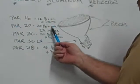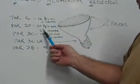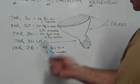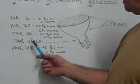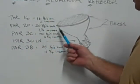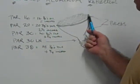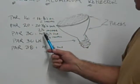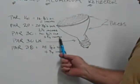A PAR 20 would be 20 eighths of an inch in diameter, that's equal to two and a half inches. A PAR 30 is 30 eighths of an inch in diameter across the face of the flood, and that's equal to three and three quarter inches.